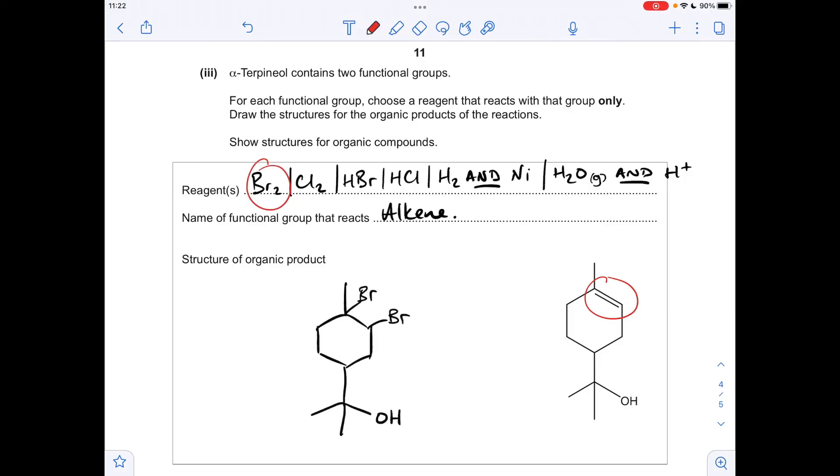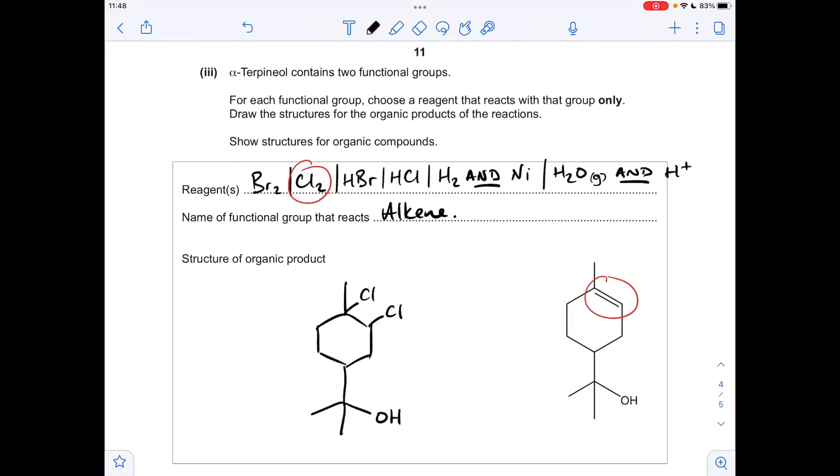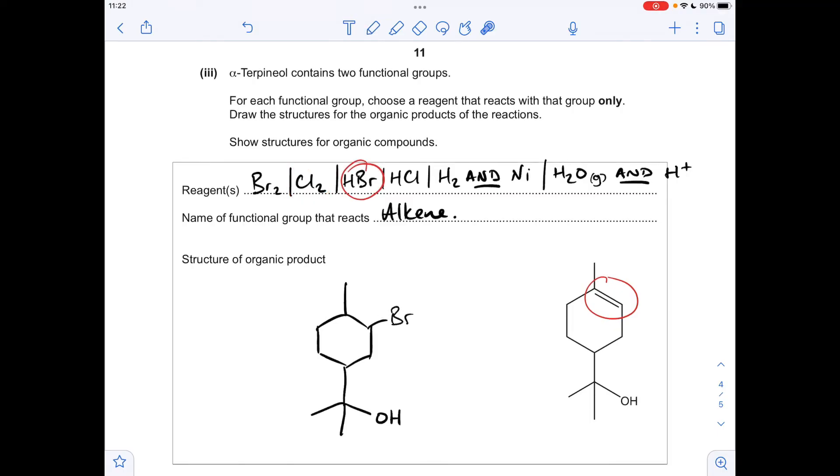So obviously the product of the reaction with bromine looks like that, with chlorine looks like that, with HBr it would look like that, or you could have the bromine there and nothing there. Likewise, with hydrogen chloride, you could either put the chlorine here where I have, or you could put it there, then obviously nothing there. With hydrogen and nickel, remember you've got to specify the nickel catalyst, you would get that. And if you've gone for the hydration reaction, so the reaction with steam and an acid catalyst, you could either put the OH group there, obviously there's a hydrogen gone there, or vice versa.